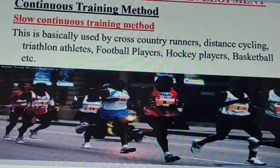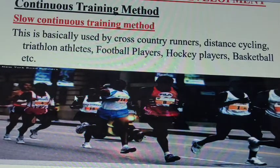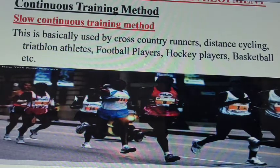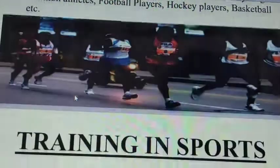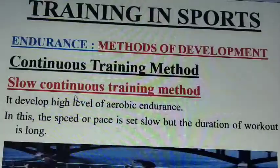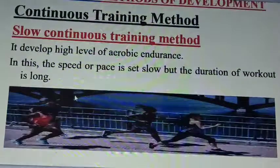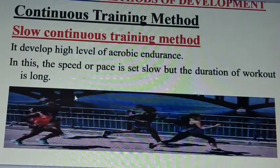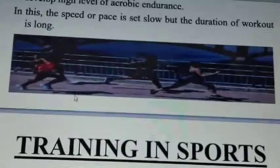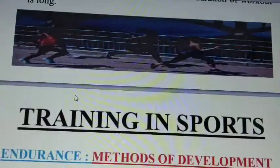Slow continuous training method is basically used for cross-country runners, distance cycling, triathlon athletes, football players, hockey players, etc. It develops a high level of aerobic endurance. In this method, the speed or pace is slow, but the duration of the workout is long.